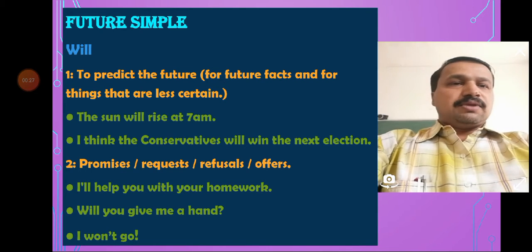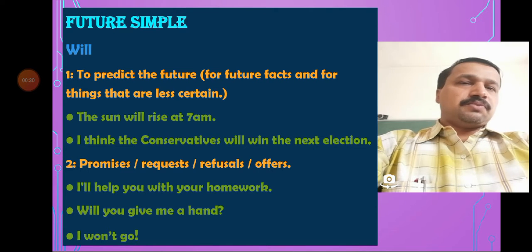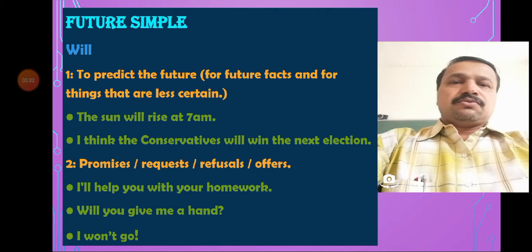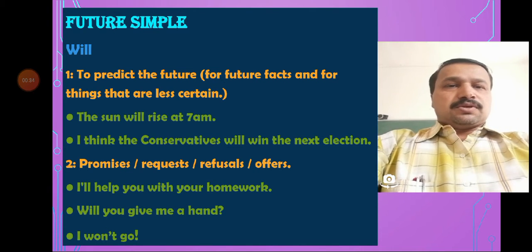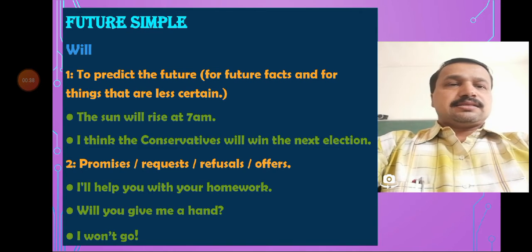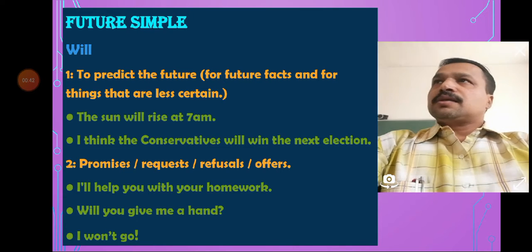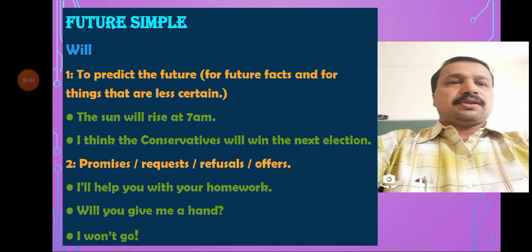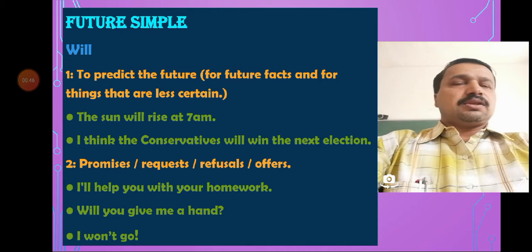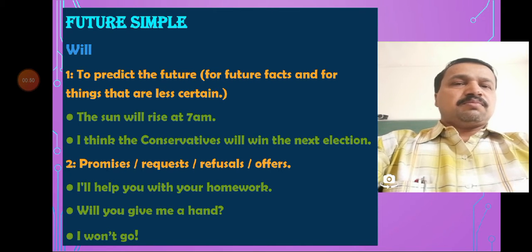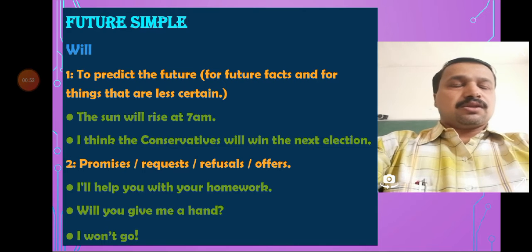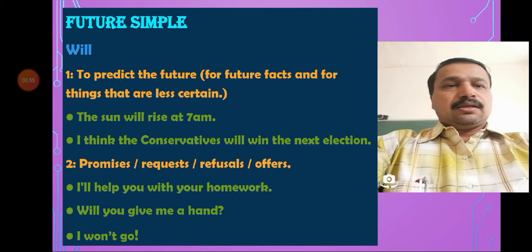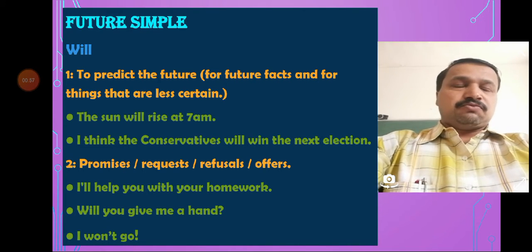They are will and shall. First of all, let's see the use of will — wherever we use will. First case: to predict the future, for future facts and for things that are less certain. Something that is possible to happen, something that is just to happen in future, they are usually discussed in simple future tense. Simple future tense is not used to give any assurance or guarantee that is so sure to happen in future.